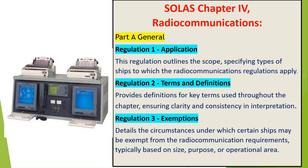Regulation 2: Terms and Definitions. Provides definitions for key terms used throughout the chapter, ensuring clarity and consistency in interpretation. Regulation 3: Exemptions. Details the circumstances under which certain ships may be exempt from the radio communication requirements, typically based on size, purpose, or operational area.